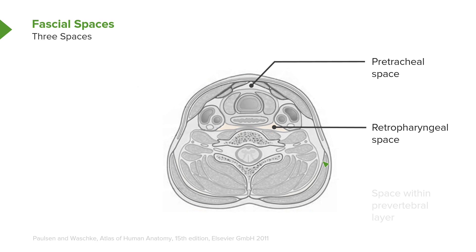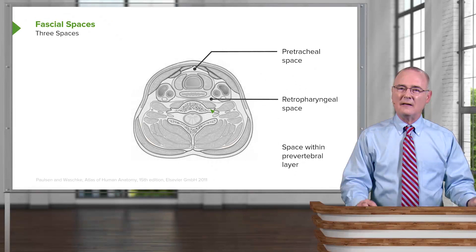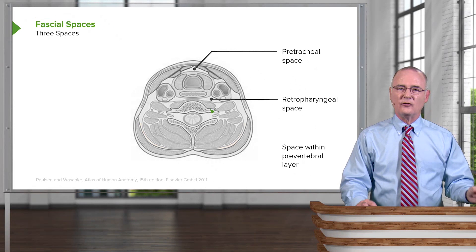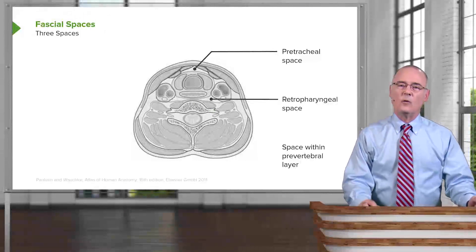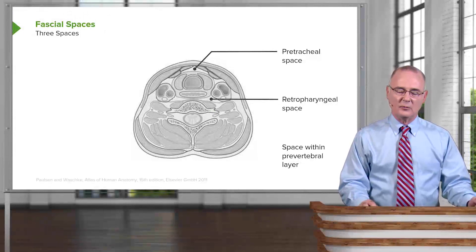The third space is the prevertebral space. That space involves the deep fascial layer that exists over the anterior portion of the body of the related vertebra and the anterior part of its transverse process. This is a bilaminar area, so there's a space between it. Unfortunately, it is not well illustrated in this particular image, but it is one to keep in mind.